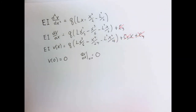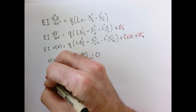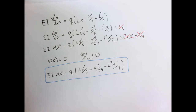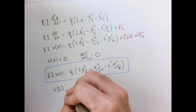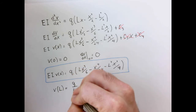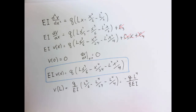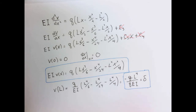So there we have it — the full functional form for the deflection of our cantilever beam under its own weight. A useful measure is the deflection at the end. I simply evaluate the deflection function at x equals L. Sometimes we call this total or maximum deflection simply delta.